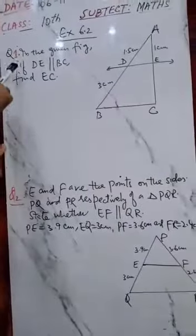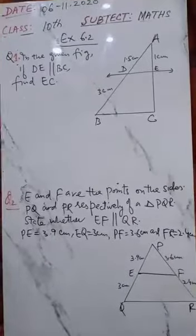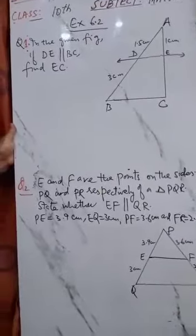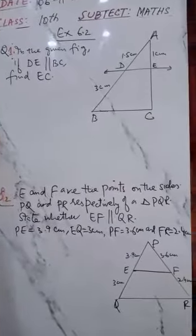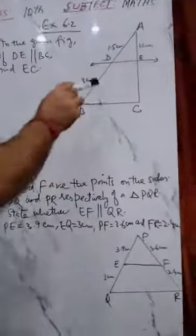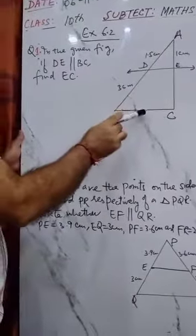Exercise 6.2, the first question. As we know that BPT theorem, we are going to draw a line from the third side.